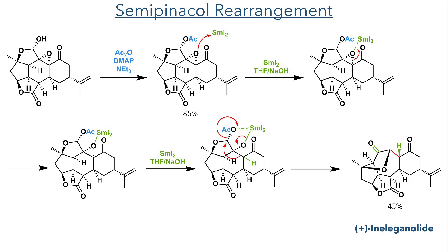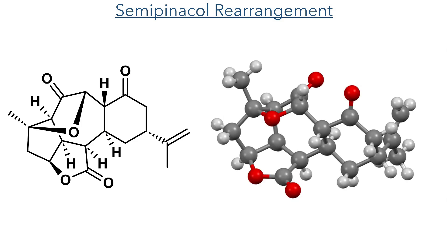The carbon-carbon bond alpha to the ketone migrates to this position as the acetate is eliminated, forming the central seven-membered ring, and finally completing the synthesis of ineleganolide after more than 20 years of research.